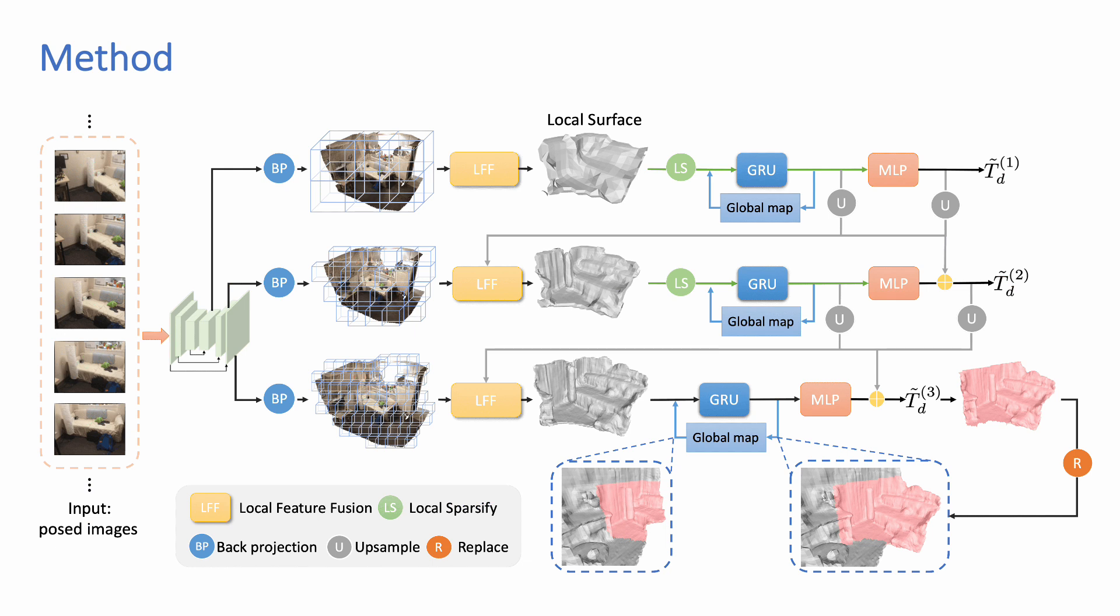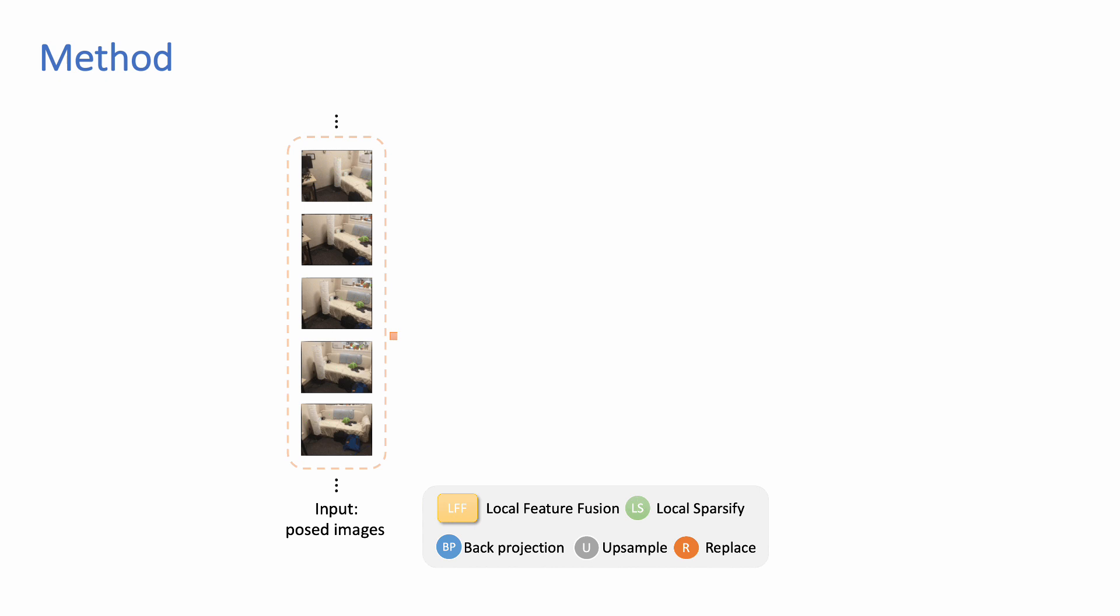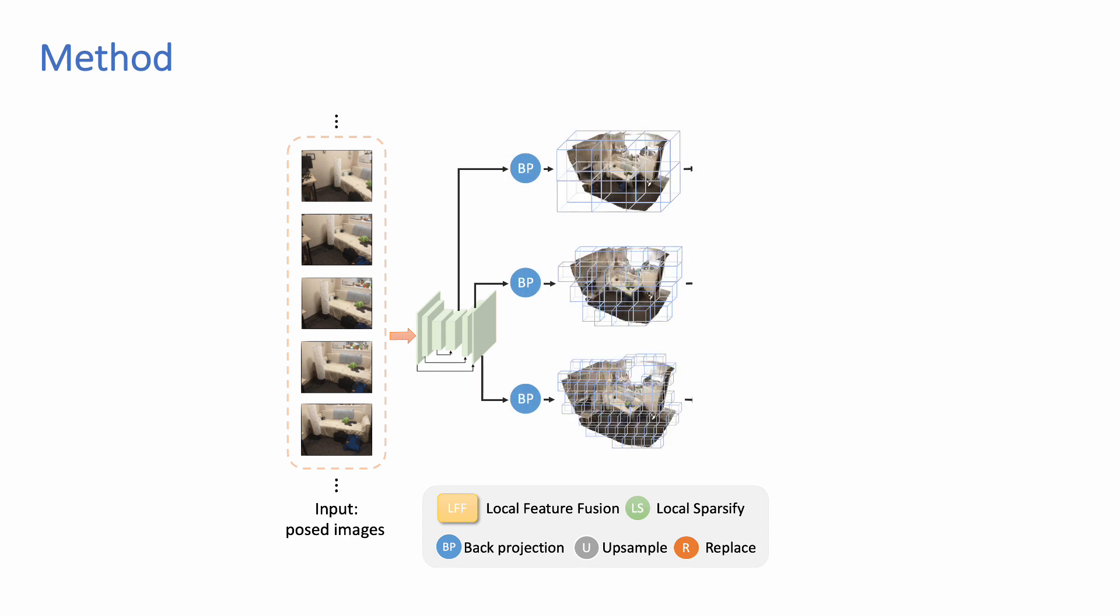Here is the overview of our coarse-to-fine pipeline. Given several keyframe images, we extract features from input images and then back-project these features into the 3D space to build a local feature volume with different resolutions.